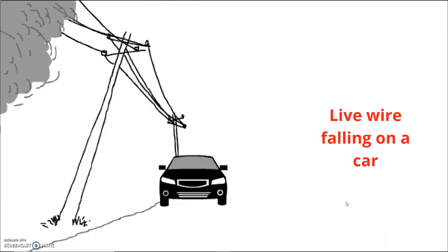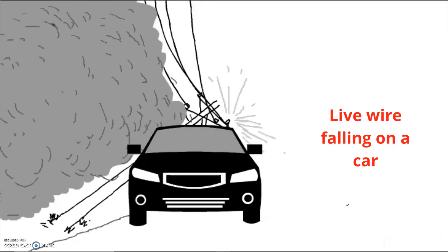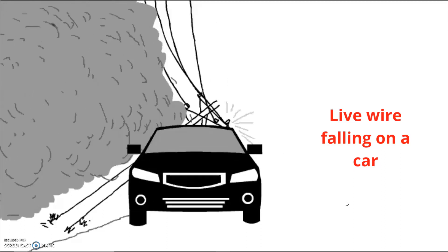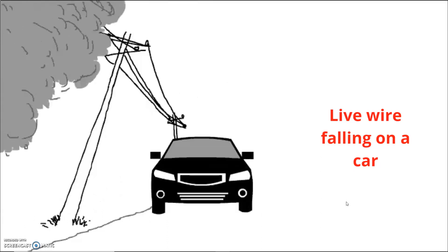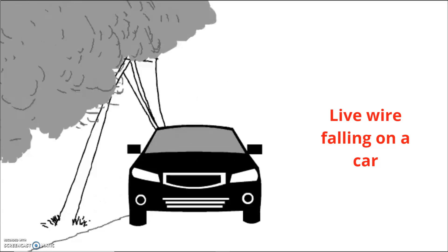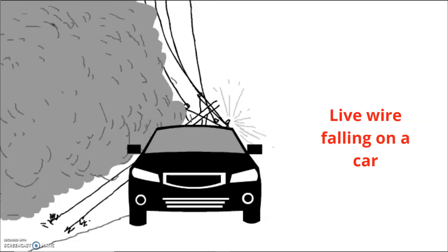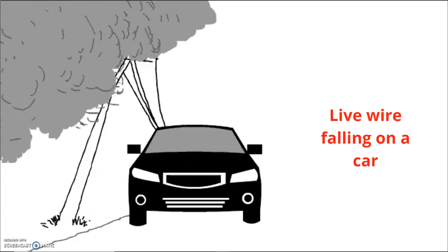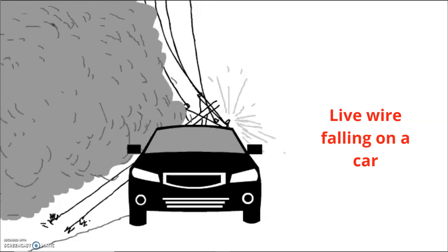Having a power line fall on your car can be one of the scariest things you could ever face while driving. If an active power line falls onto your car, it can charge the car with electricity, meaning you must act with extreme caution to avoid electrocution. If your car is not on fire, just call the emergency number and stay put in your car, but be careful not to touch the car's frame as it will be charged. If your car is on fire, exit by jumping free of the vehicle without making any contact with the metal inside, and then shuffle to safety with both feet together on the ground until you are around 50 feet from the car — then you can call for help.